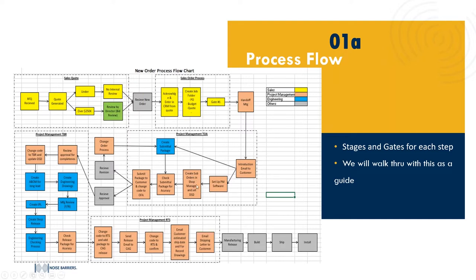Once the project manager understands the scope, an email is sent to the customer letting them know who their project manager is and when drawings can be expected. We set up the order in our project management software to track it, and we split the order in our shop manager tool into multiple sub-orders — panels, structural steel, install, and freight — so those items can move and flow at their own pace throughout our shop rather than being one clunky large dollar amount. If materials need to be ordered sooner, we can procure them sooner.